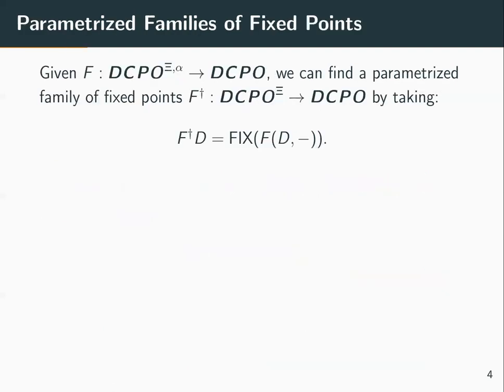We already know that when we interpret recursive types using functors, we can use parametrized families of fixed points to do so. Given a functor F from DCPO^{ψ,α} to DCPO, what we typically do is find a parametrized family of fixed points F†. F† is a functor from DCPO^ψ to DCPO, and its action on objects D is given by the fixed point of the partial application of F to D.